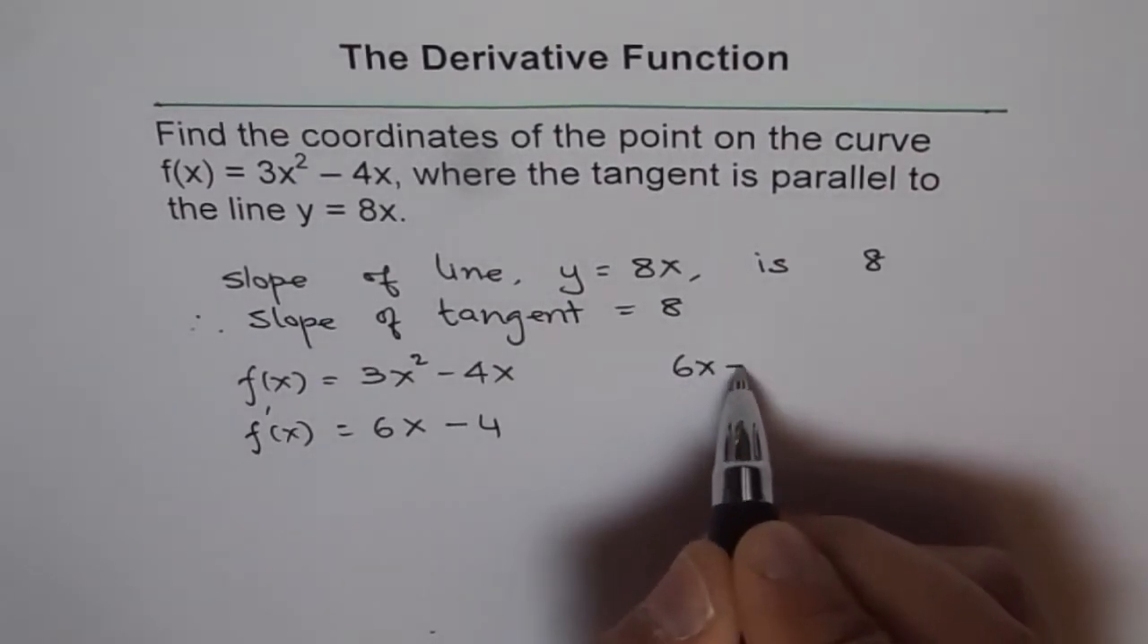Now we need to find coordinates of the point where this slope equals 8. That means we solve 6x - 4 = 8. So we get 6x = 8 + 4 = 12, and x = 12/6 = 2.